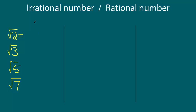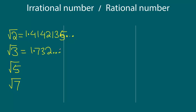So let's write the decimal expansion of square root 2, which gives us 1.41421356... and so on. Now let's look at square root 2 divided by a rational number. 1 is a rational number, and we know that anything divided by 1 is that number, so clearly square root 2 divided by 1 is an irrational number. That was easy, but let's take a look at some more complex examples.